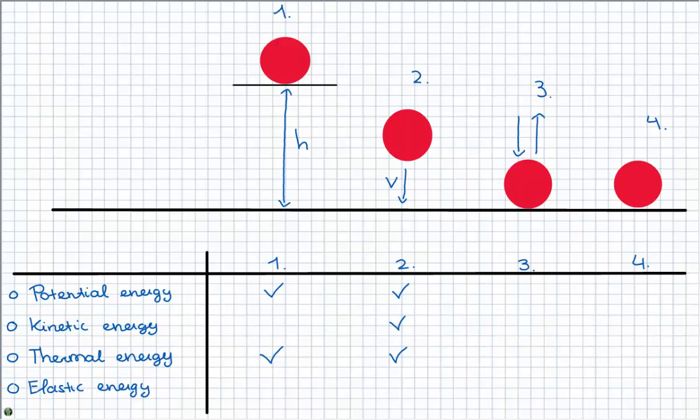In situation 3 the ball hits the ground. So no height, no potential energy. No kinetic energy, it is not moving. It has a temperature so there is thermal energy. And there is elastic energy.